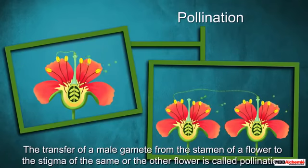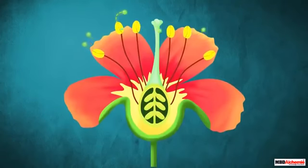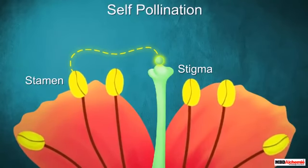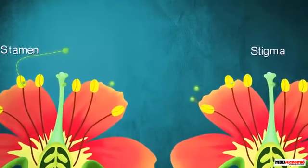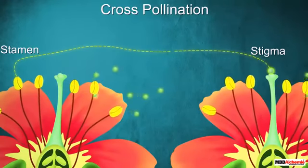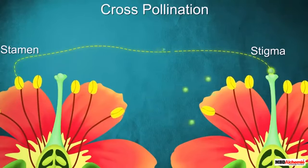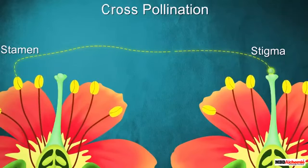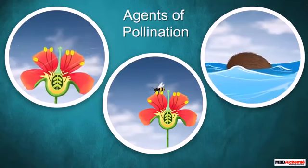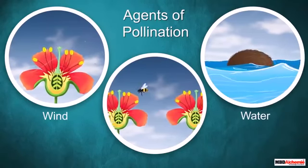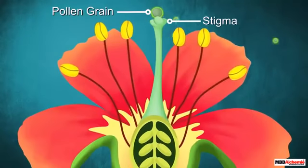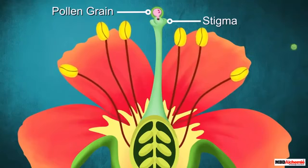Such transfer of pollen grains is known as pollination. If the pollen grain of a flower lands on the stigma of the same flower, it is called self-pollination. But if the pollen grain of a flower lands on the stigma of another flower of the same or another plant of the same type, it is called cross-pollination. Pollination occurs with the help of different agents like wind, water, or animals. Once a pollen grain reaches the stigma of a suitable flower, a tube grows from the pollen grain.